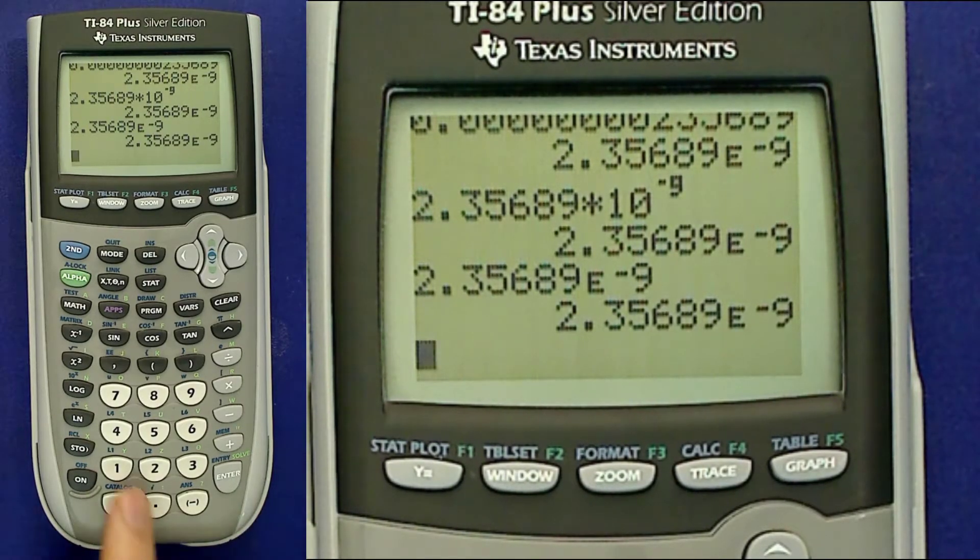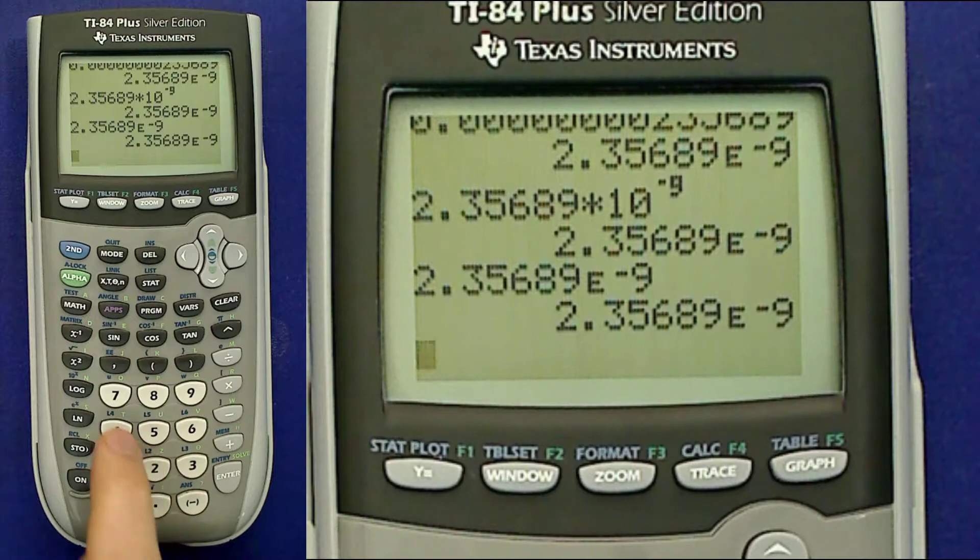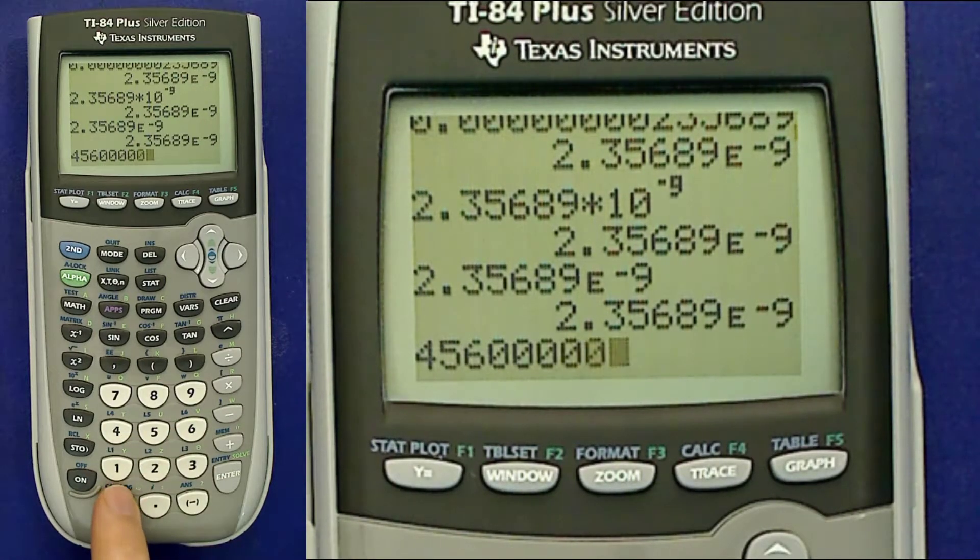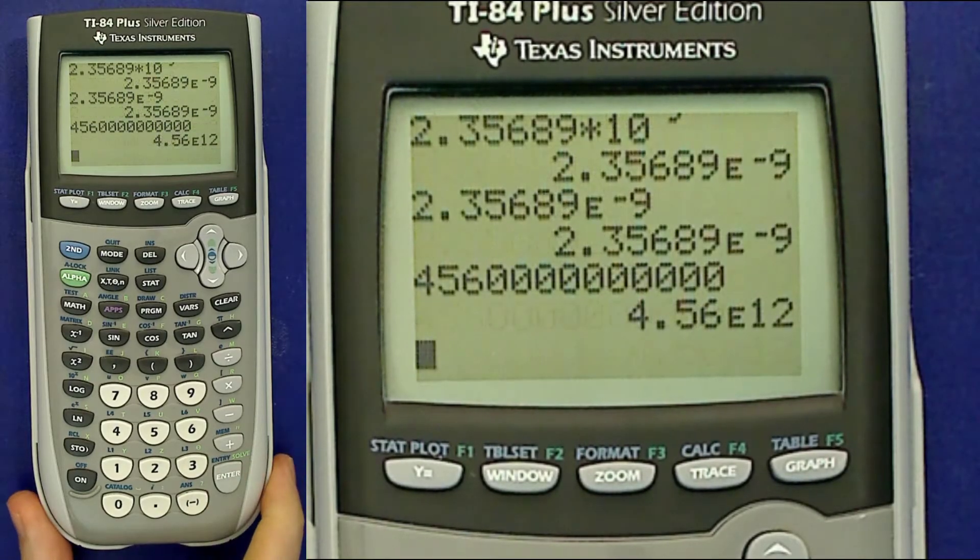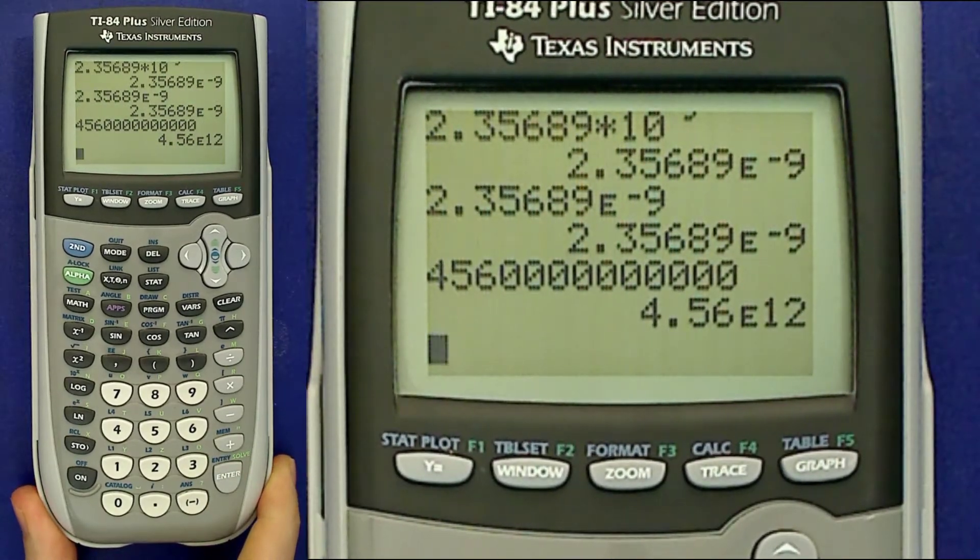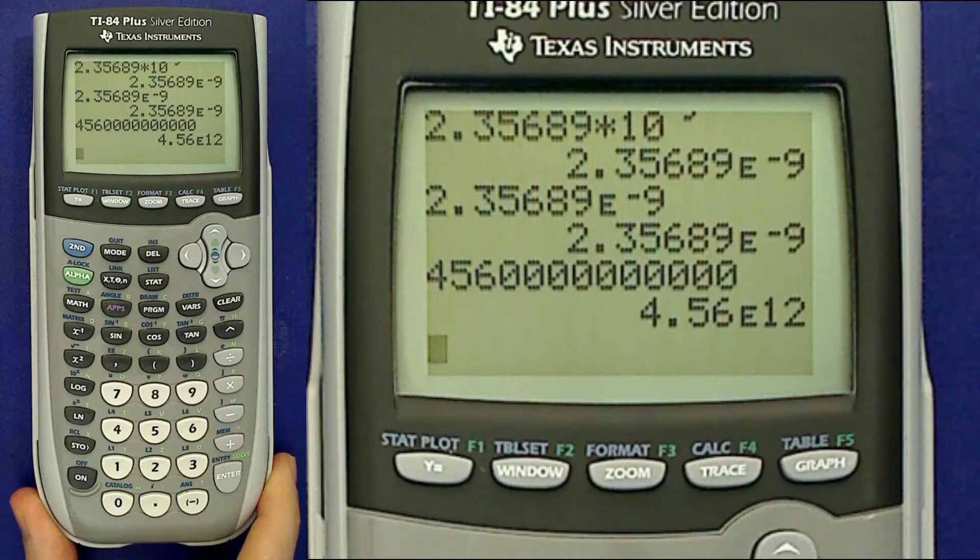Here's another way you might see it. Suppose that I type 456 and then lots of zeros. So this is a very large number. Now when I hit enter again, the calculator expresses it in scientific notation. That's 4.56 times 10 to the power 12.